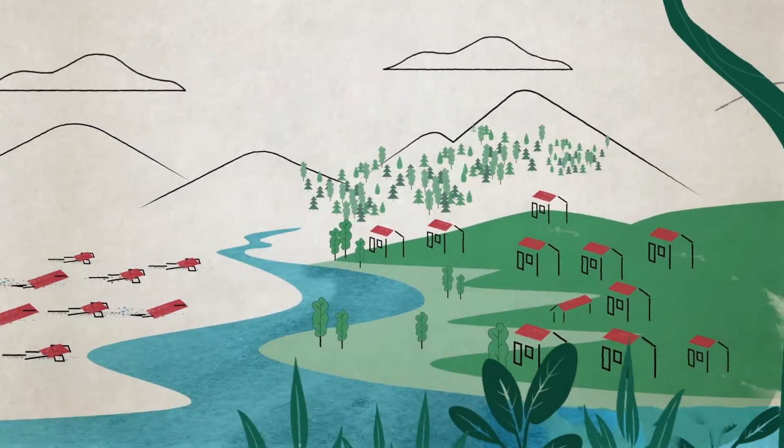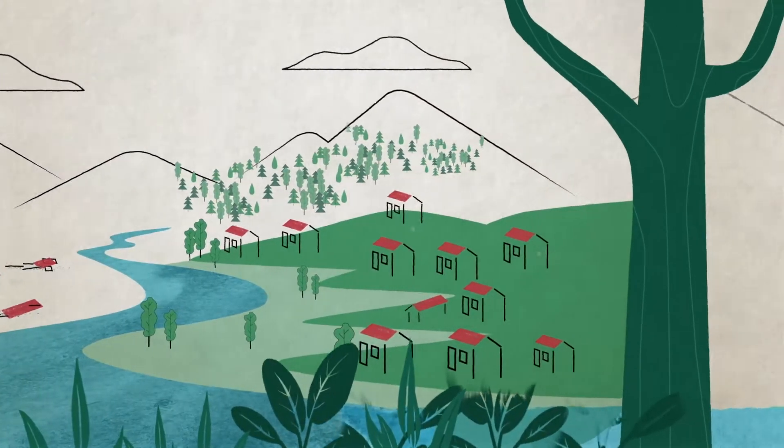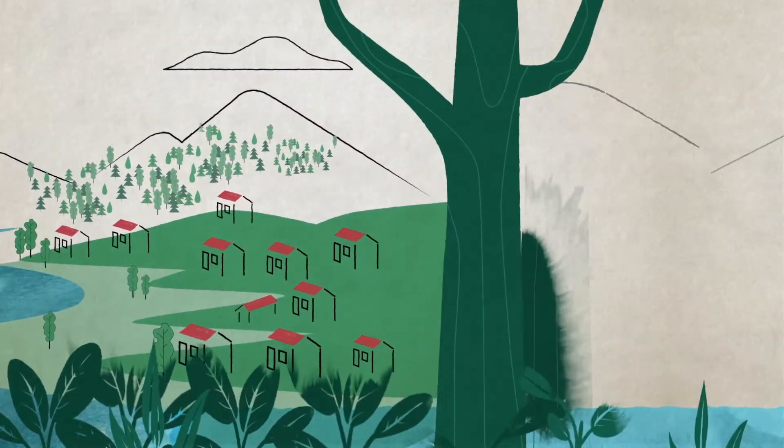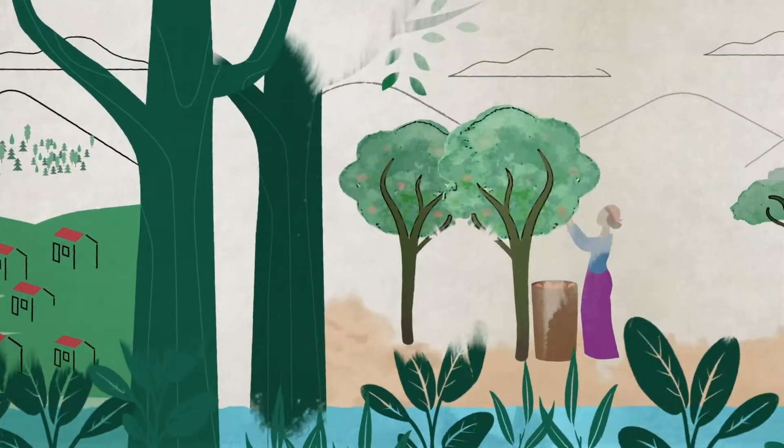Nature-based solutions, like protecting and restoring forests and wetlands, can enhance the resilience of rural and urban communities by buffering against extreme events.